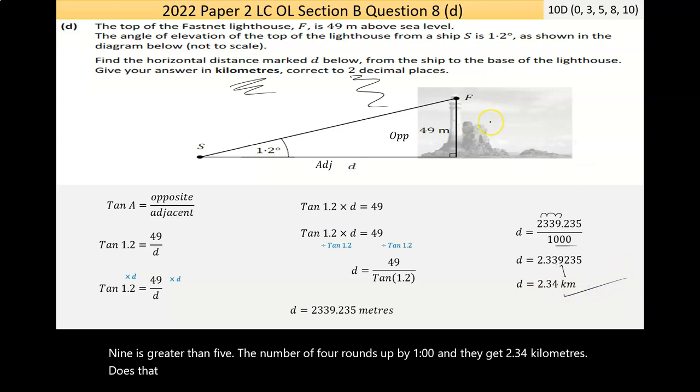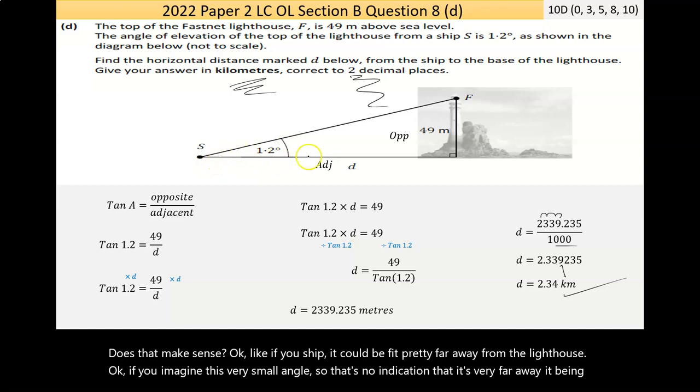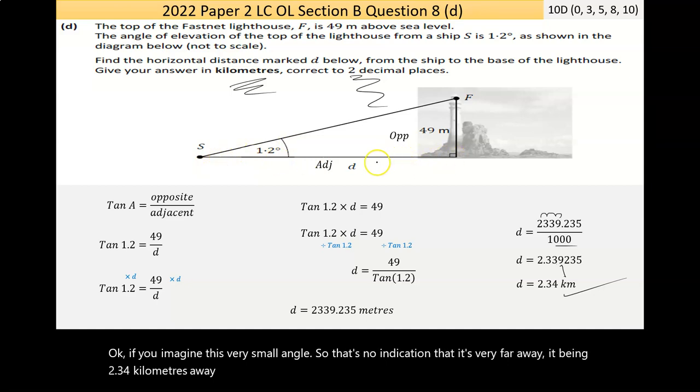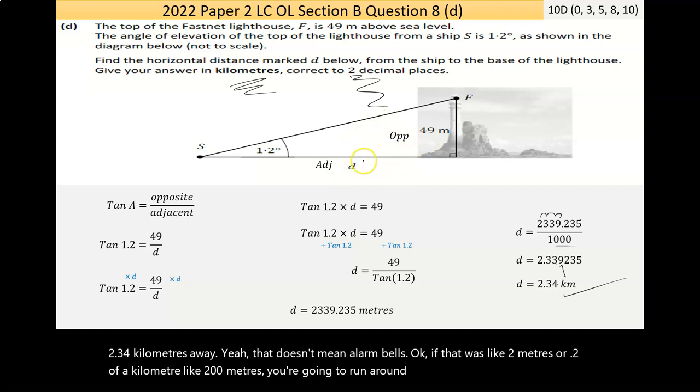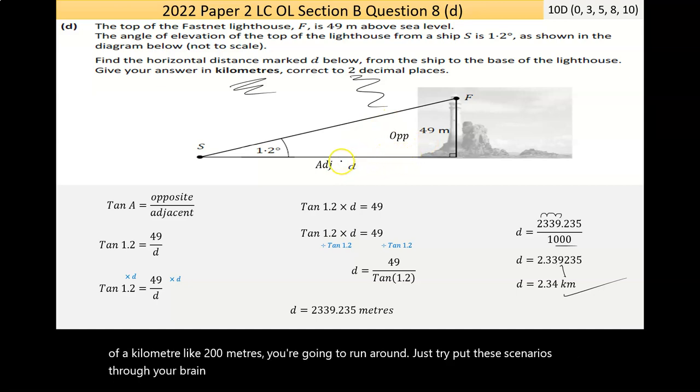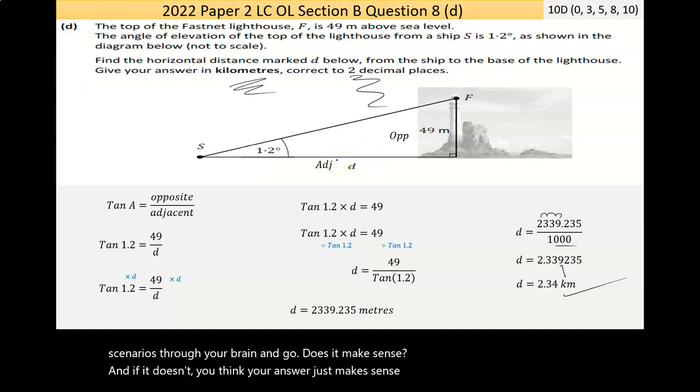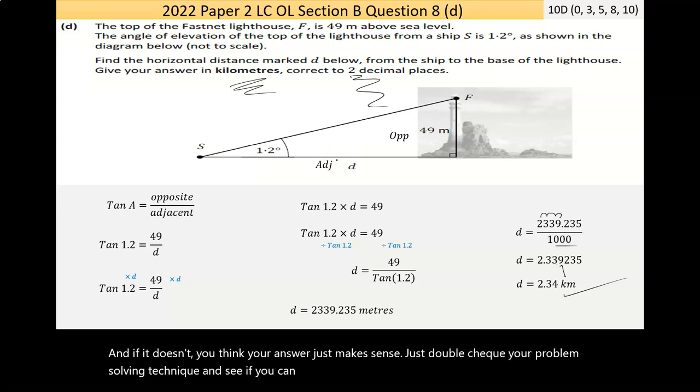Does that make sense? Like, if your ship, this could be pretty far away from the lighthouse. If you imagine this, it's a very small angle. So, that's been another indication that it's very far away. It being 2.34 kilometers away, yeah, that doesn't ring any alarm bells. If that was like 2 meters or 0.2 of a kilometer, like 200 meters, you're going to run aground. Just try to put these scenarios through your brain and go, does it make sense? And if it doesn't, and you think your answer just makes sense, just double-check your problem-solving technique and see if you can figure out if anything went wrong in that.